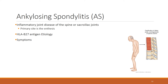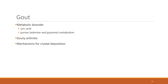The scar tissue ossifies and calcifies, causing joints to eventually fuse. These are the body's best efforts to repair, but ossification of scar tissue causes joint fusion. Early symptoms include low back pain, stiffness, decreased mobility, and loss of lumbar curvature — the patient will have a somewhat flat back due to spinal fusion.